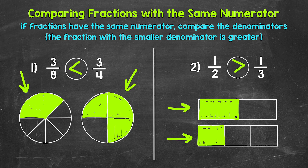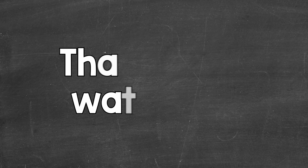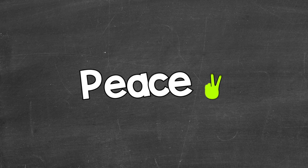There you have it — that's how to compare fractions with the same numerator using models. Just remember, if fractions have the same numerator, compare the denominators. The fraction with the smaller denominator is greater. I hope that helped. Thanks so much for watching. Until next time, peace.